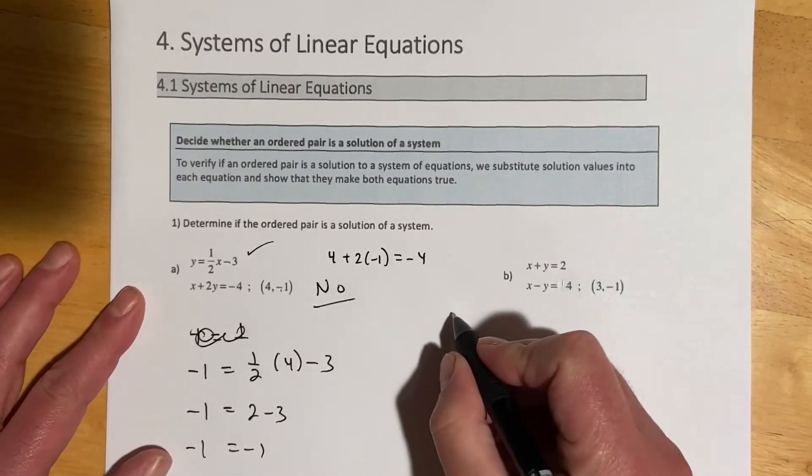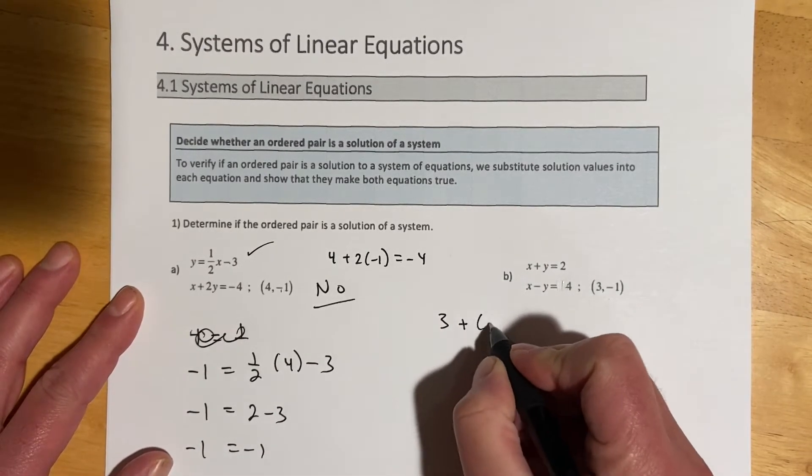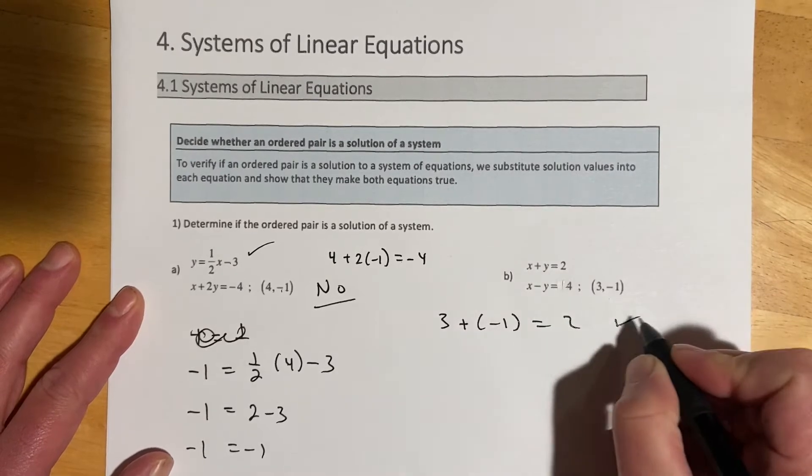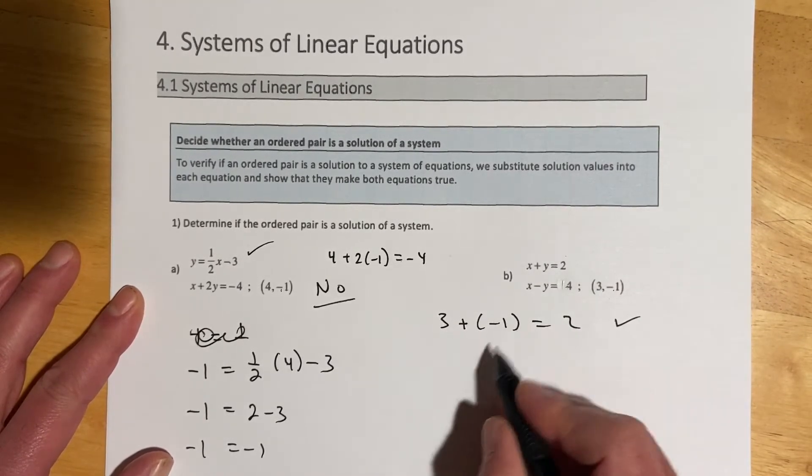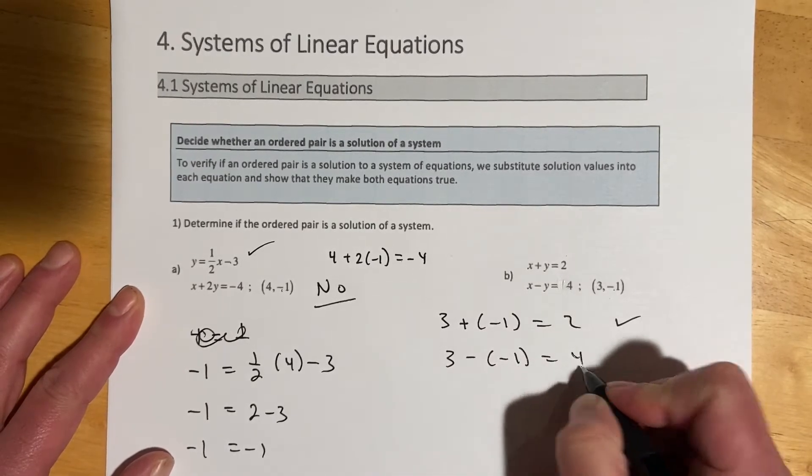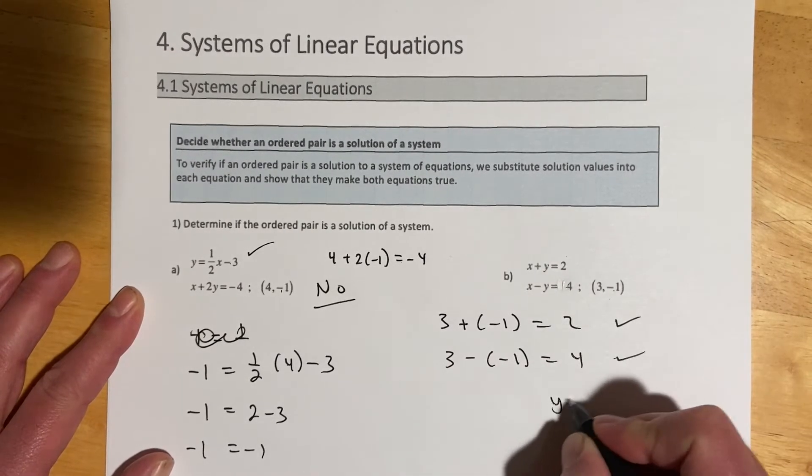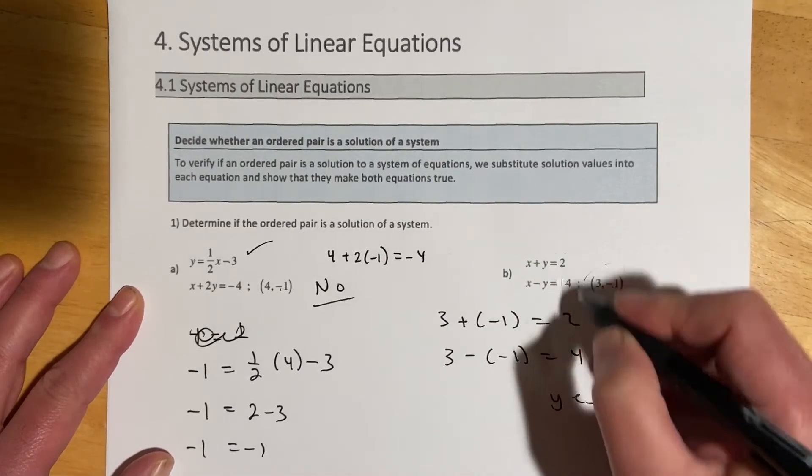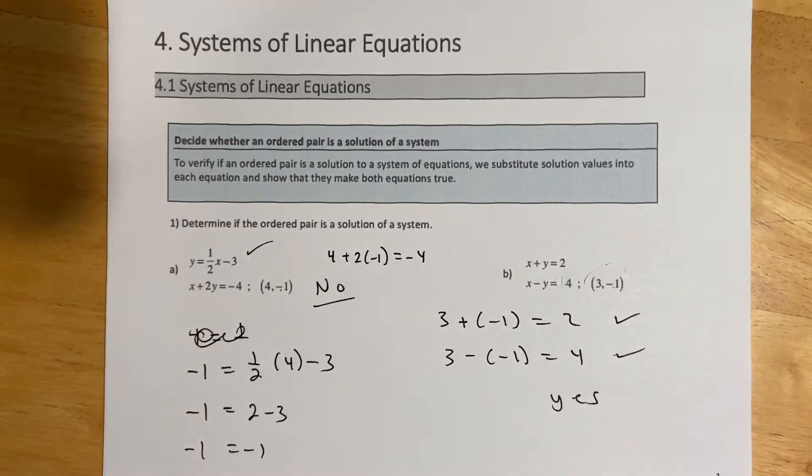Same idea over here. So 3 plus negative 1 does make 2. So it works in the first equation. That would be 3 minus 1. And then 3 minus a negative 1 does make 4. So this is yes, this point does satisfy both of these equations. So it is a solution.